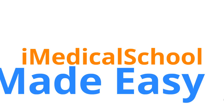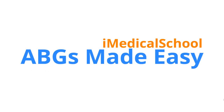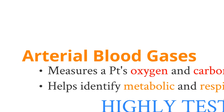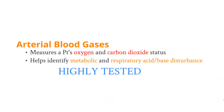Hey, this is Dr. K from iMedical School, and today's lesson is ABGs Made Easy. ABGs, otherwise known as arterial blood gases, allow us to measure a patient's oxygen and carbon dioxide in their arterial blood. With these values, we can identify metabolic and respiratory acid and base disturbances. Being able to interpret ABGs is a highly tested subject, so you really need to know this if you're entering the medical field.